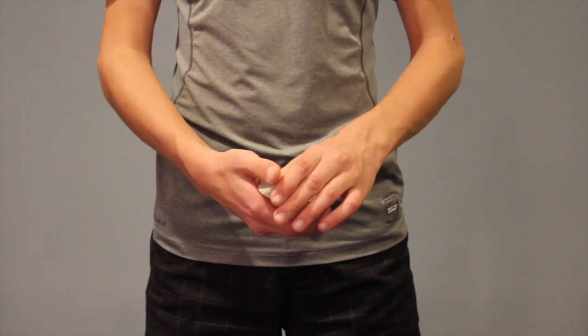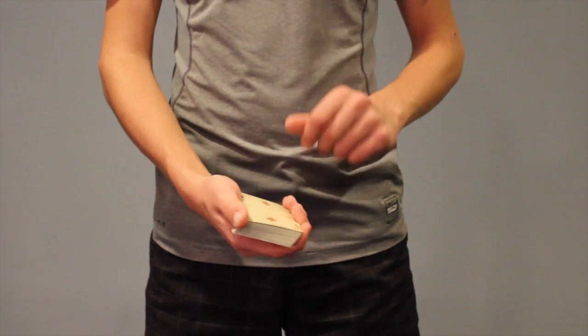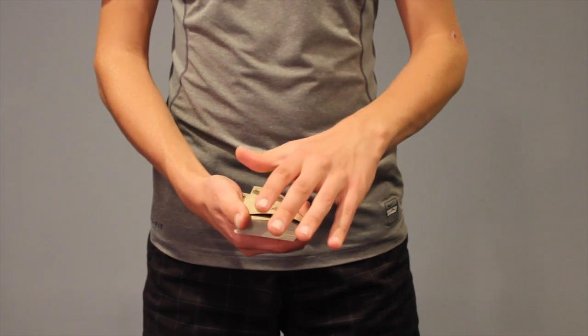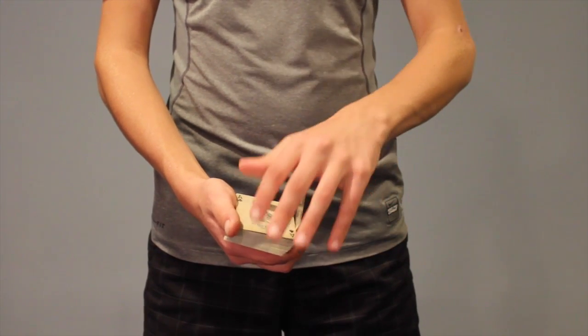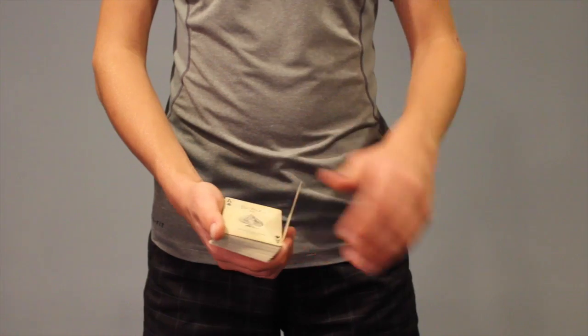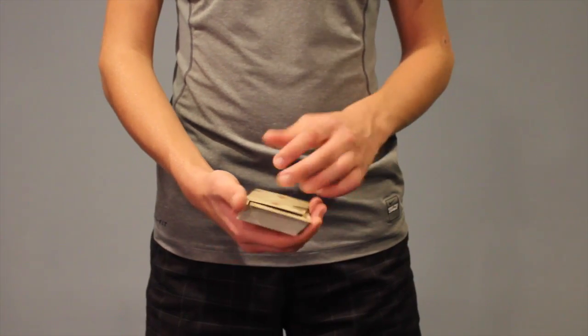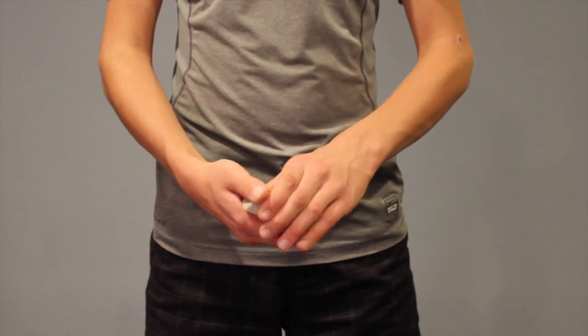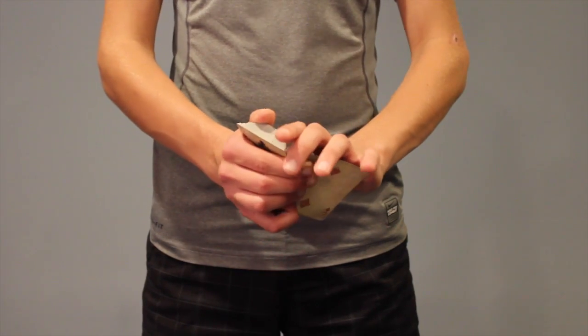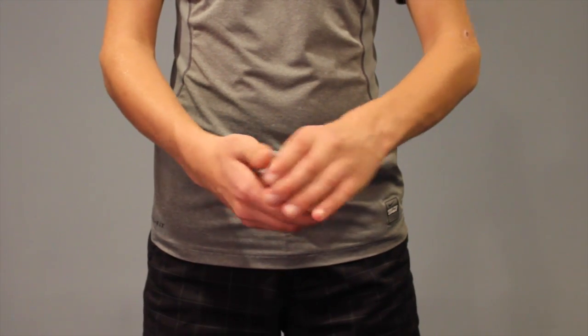Once you have that down, then it all comes down to timing. All you're doing, flicking your hand in front and covering that. So you can see the difference there. Now you're probably wondering, how do I get that card out of there? After you've done this move, all you're doing is pushing it under with this hand there.